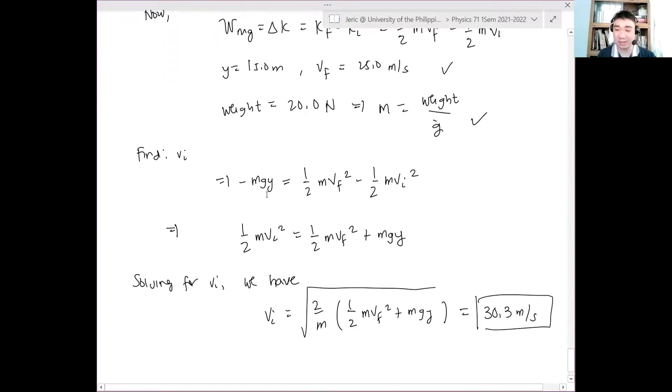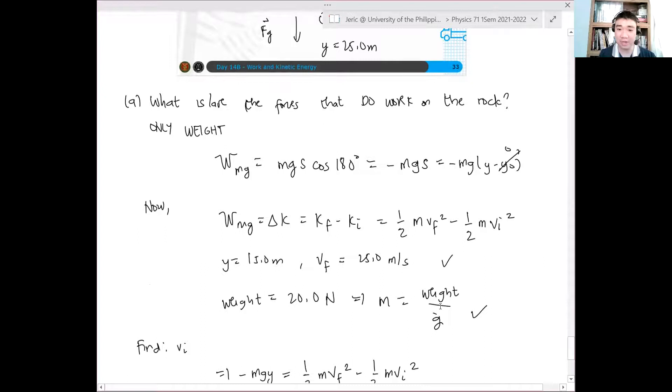Therefore, we expect that initially, it has higher speed. 30.3 meters per second. Dun sa initial velocity niya, it's 25. At some final velocity, it's 25 meters per second. Which means that bumagal lang konti yung object.